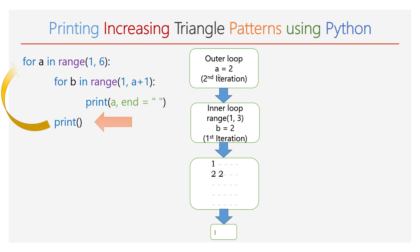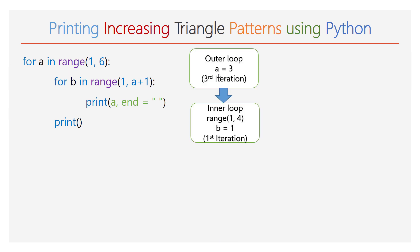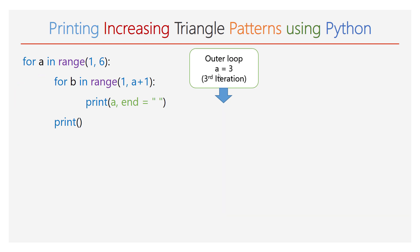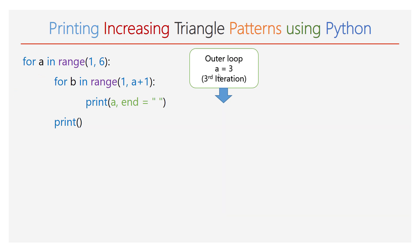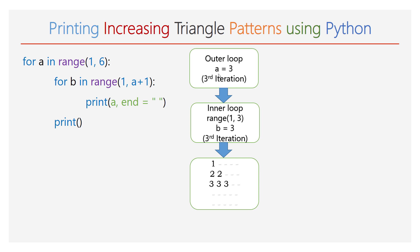Again, the execution starts from the first line. The value of a will be 3. The range of b will be 1 to 4, so the inner for loop will iterate for 3 times. During each iteration, it is going to print number 3 in the output: during the first iteration one 3, during the second iteration one more 3, and during the third iteration one more 3 is printed. Next, an empty print function is executed and the cursor takes a fresh line.